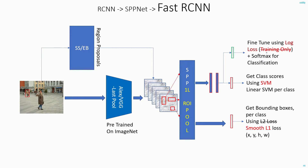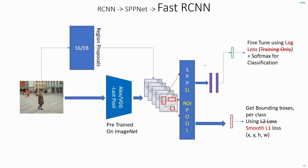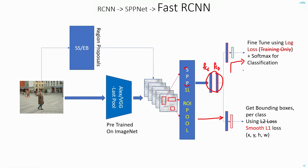Secondly, they experimentally found out that whether you use softmax for classification or the SVM, you get the same levels of accuracy. So instead of using both networks they got rid of the SVM classifier. Also the FC6 and FC7 layers were connected directly to the classification network, and for the bounding box regressor the output of the spatial pyramid pooling was connected directly. But here they made these two layers common to both the classification and the bounding box regressor.